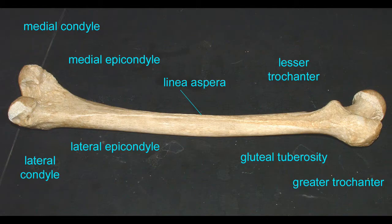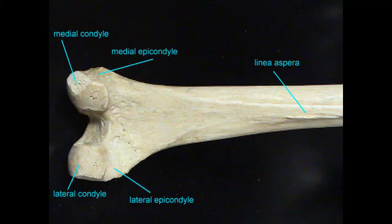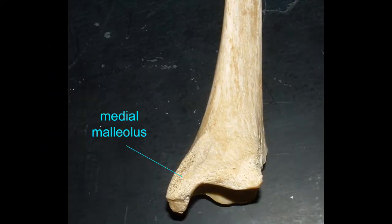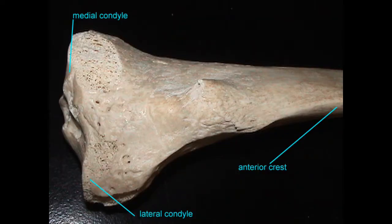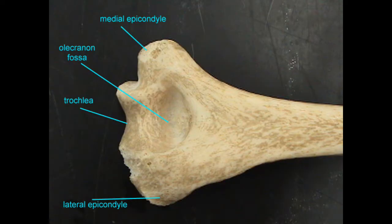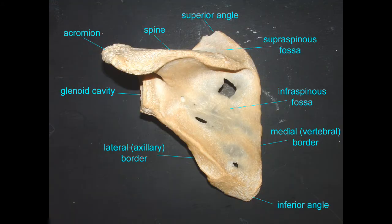The terms medial and lateral are often used in the names of anatomical structures, such as the medial and lateral condyles and epicondyles of the femur, the medial malleolus of the tibia, the medial and lateral condyles of the tibia, the medial and lateral epicondyles of the humerus, the medial border of the scapula, and so on.